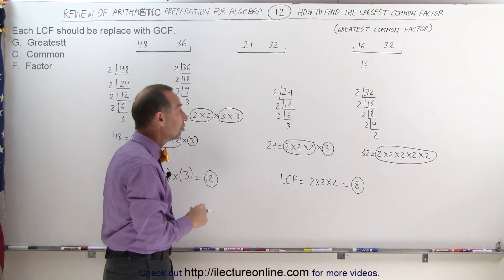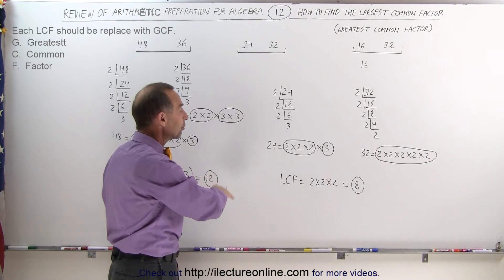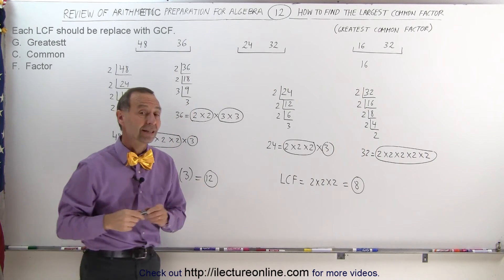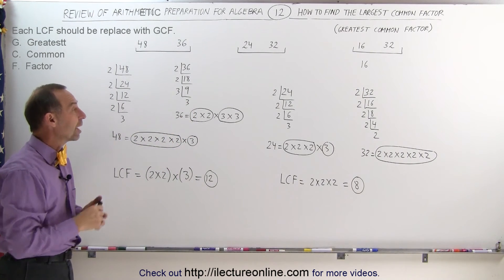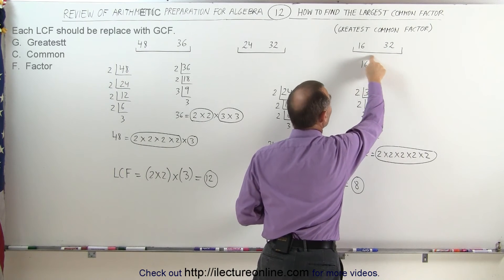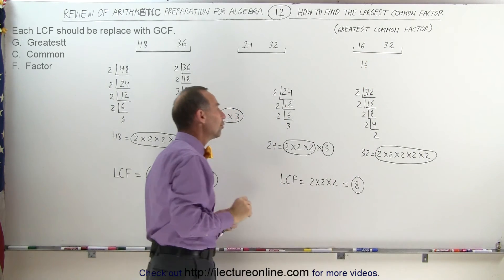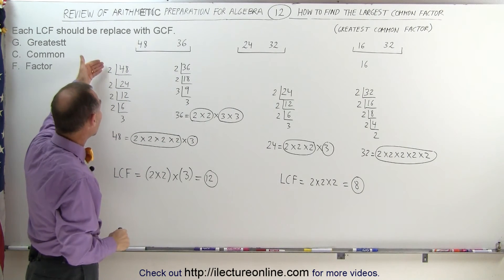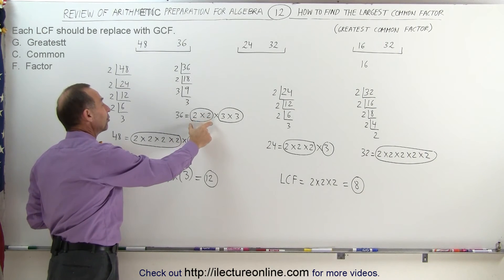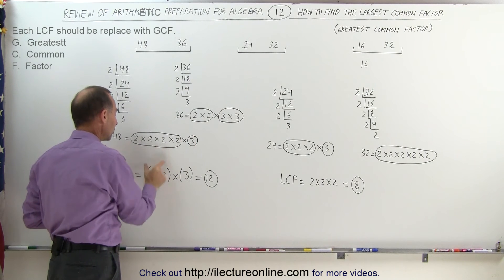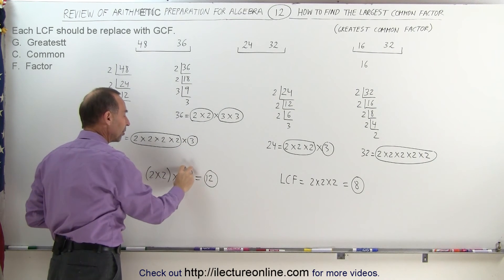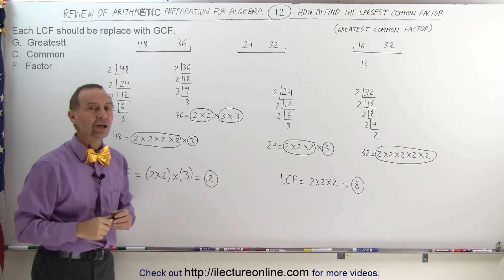That means both 24 and 32 can be divided by 8, which is the largest number that fits evenly into both. Any larger number will not fit evenly into both 24 and 32 at the same time. Remember: always check first if the smallest number fits evenly into the largest. If it does, you're done. If not, break each number down as a product of prime numbers, grab the smallest count of each prime type, and multiply them together — that gives you the largest common factor.